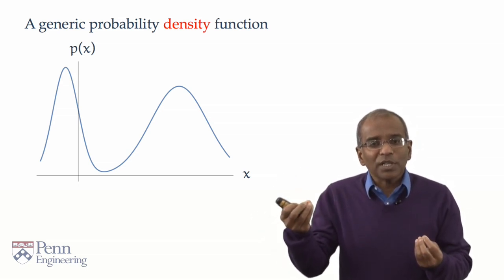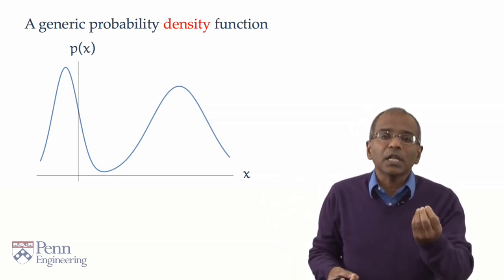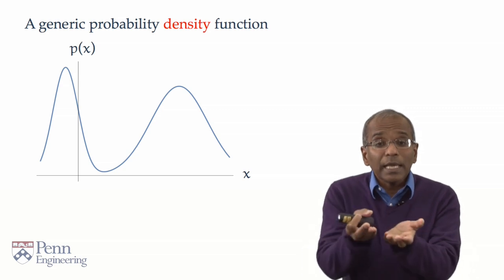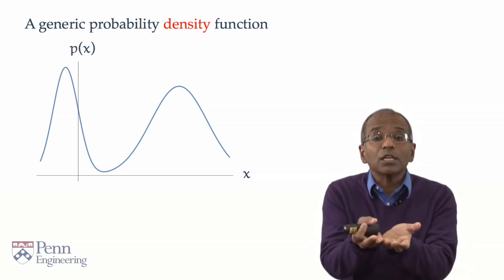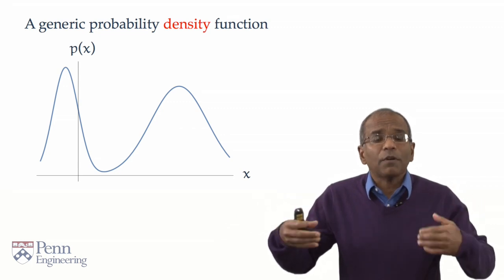I've called this function p of x to connect it to the idea of the probability mass function. Recall, for a mass function, the argument was discrete, a set of integers. But now we are going to deal with a function of a real variable. The implicit sample space here is the continuum, the real line. p of x now is a function of x.